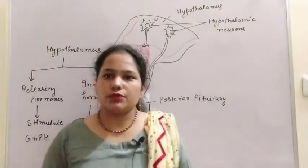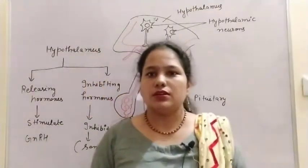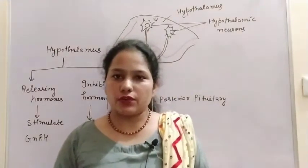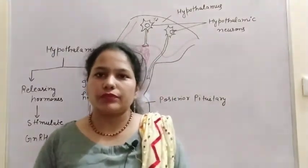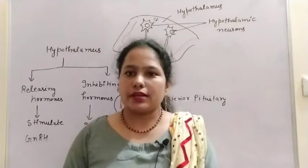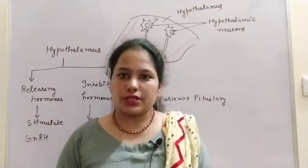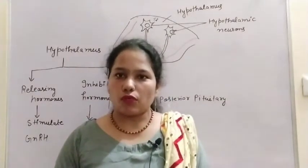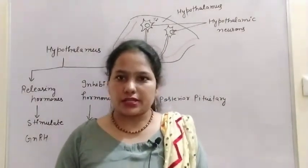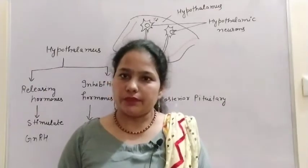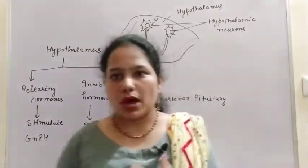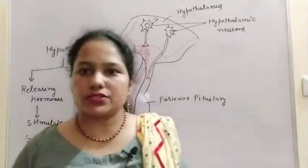Hello students, welcome to my channel. Today we will discuss the first endocrine gland, and that is the hypothalamus. The hypothalamus is a part of the forebrain and it also acts as an endocrine gland. It is also known as the master of master gland.